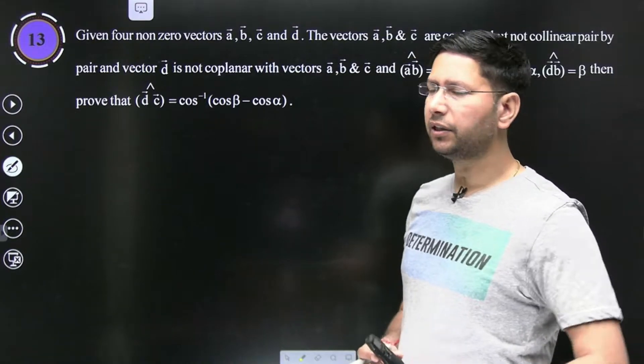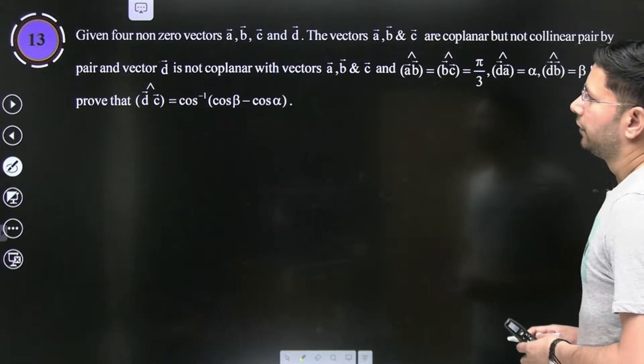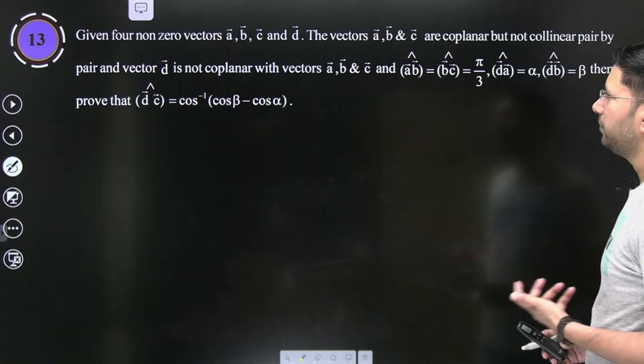A, B ke collinear nahi hai, B, C ke collinear nahi hai and so on. C, A ke collinear nahi hai. Vector D is not coplanar with vectors A, B, C.